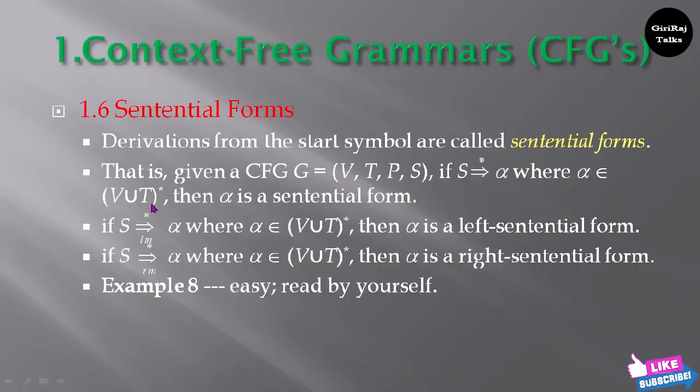The final string you get is that sentential form. So that final string belongs to V union T of star. Using these variables and terminals, you're going to make one alpha.